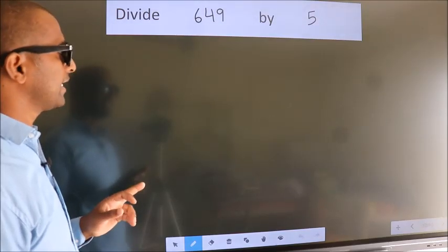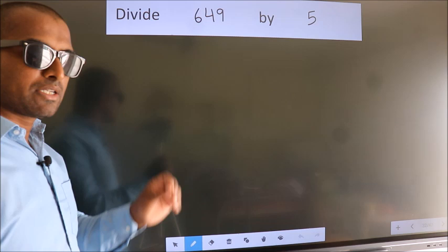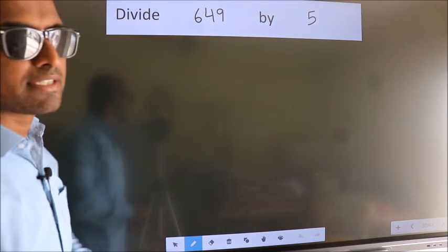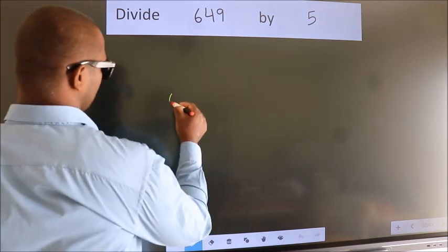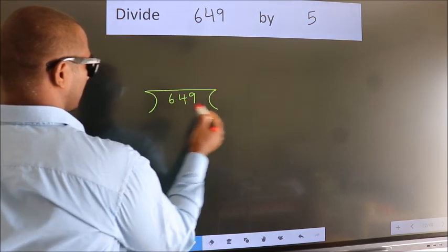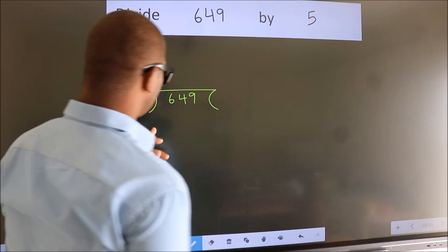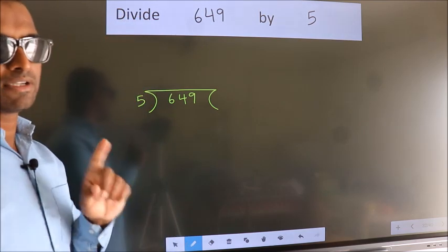Divide 649 by 5. To do this division, we should frame it in this way. 649 here, 5 here. This is your step 1.